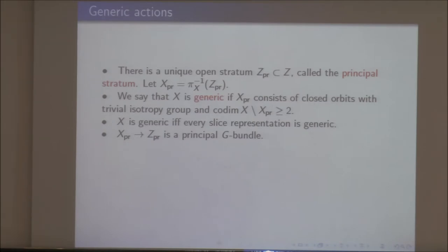We say X is generic if the principal stratum of X consists of closed orbits with trivial isotropy group, and the codimension of the remaining orbits is at least two. This says there is an open subset X^{pr} of X where every orbit is closed and isomorphic to G (trivial isotropy), and the complement has codimension two.